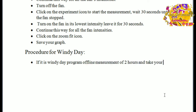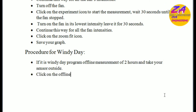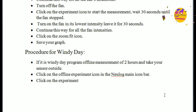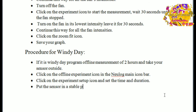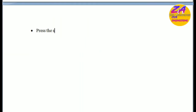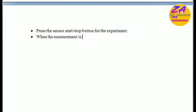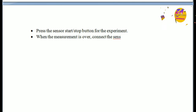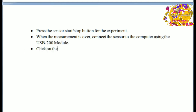For a windy day, program an offline measurement of two hours and take your sensor outside. Click on the offline experiment icon in the NewLog main icon bar. Click on the experiment setup icon and set the time and duration. Put the sensor in a stable place and press the sensor start/stop button to begin the experiment.